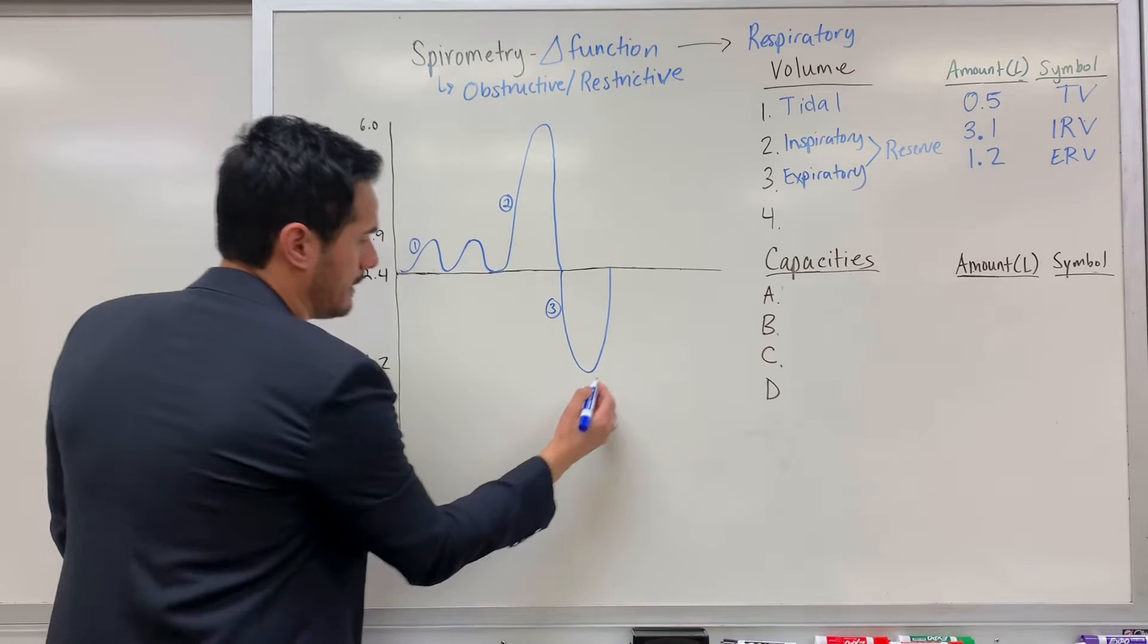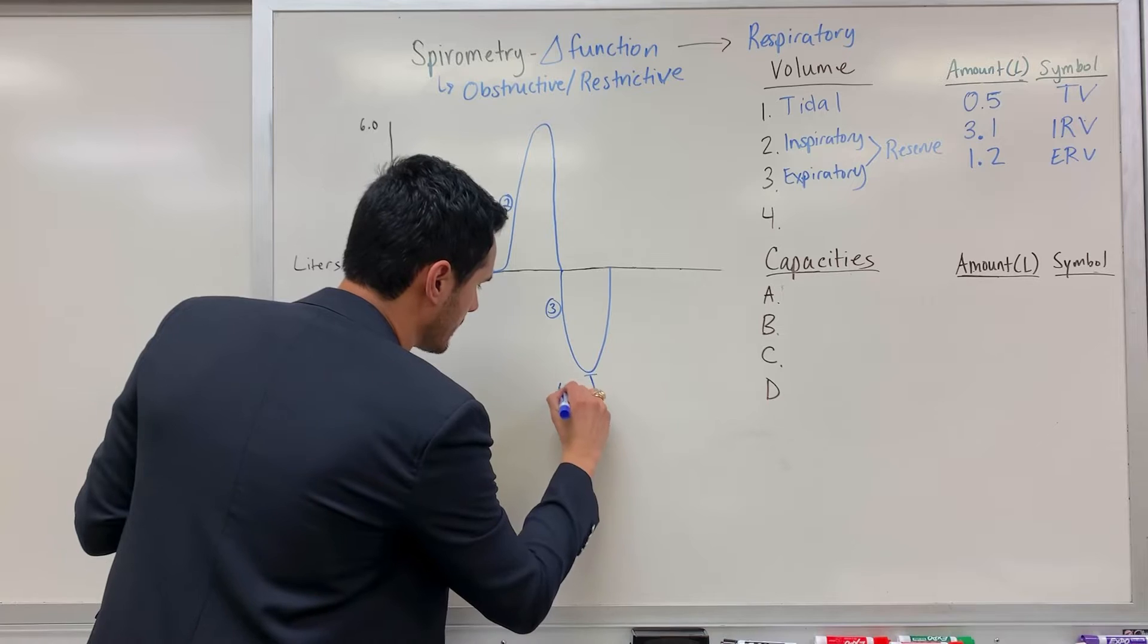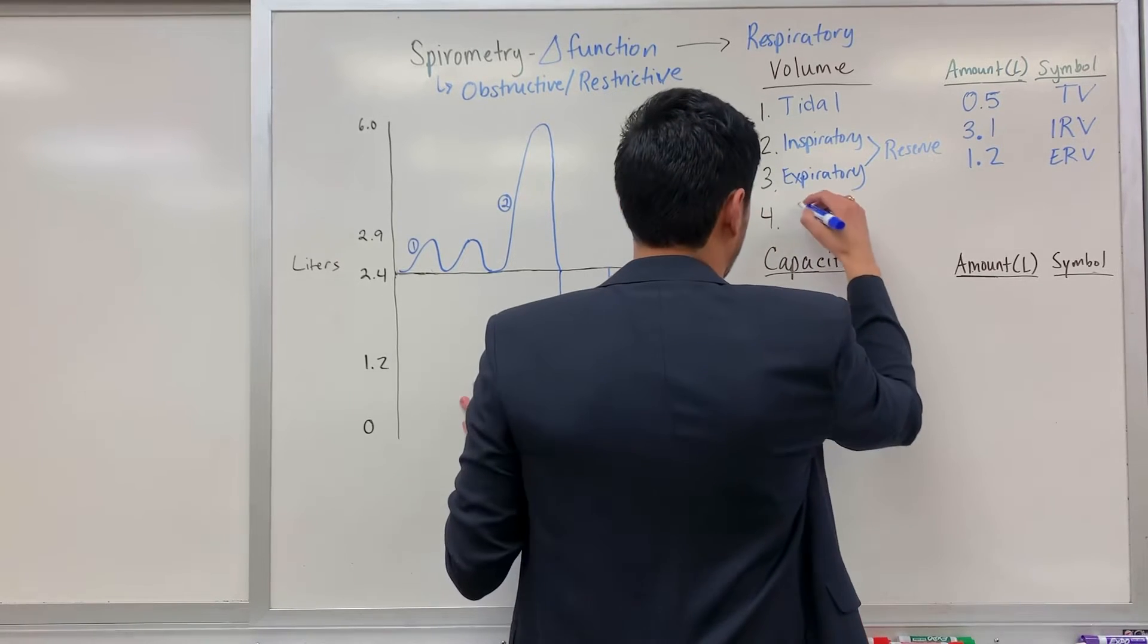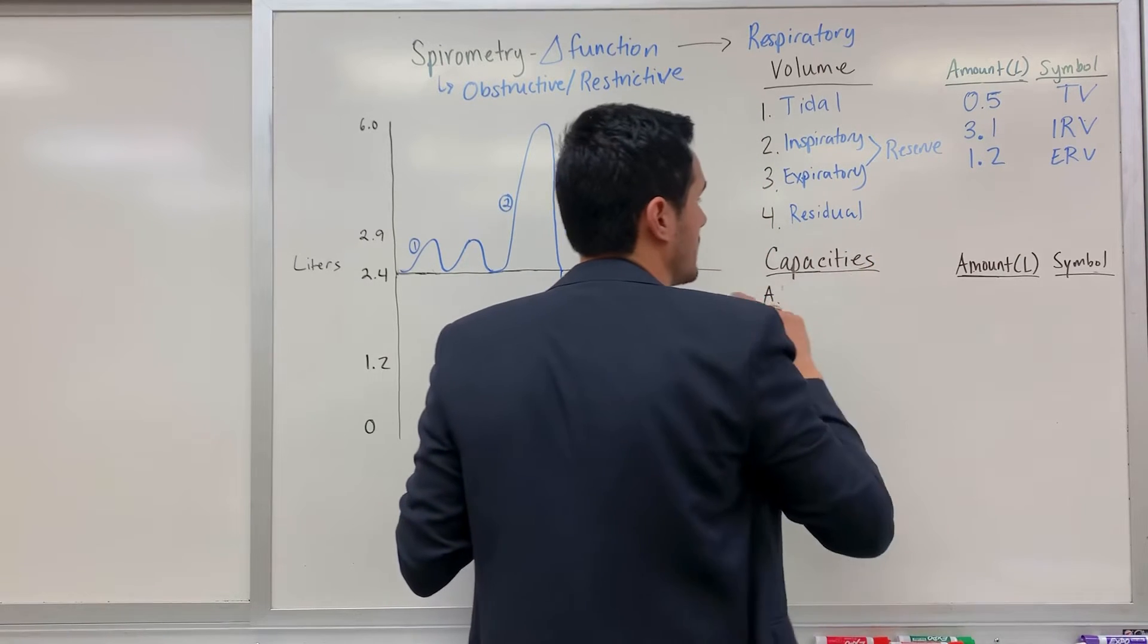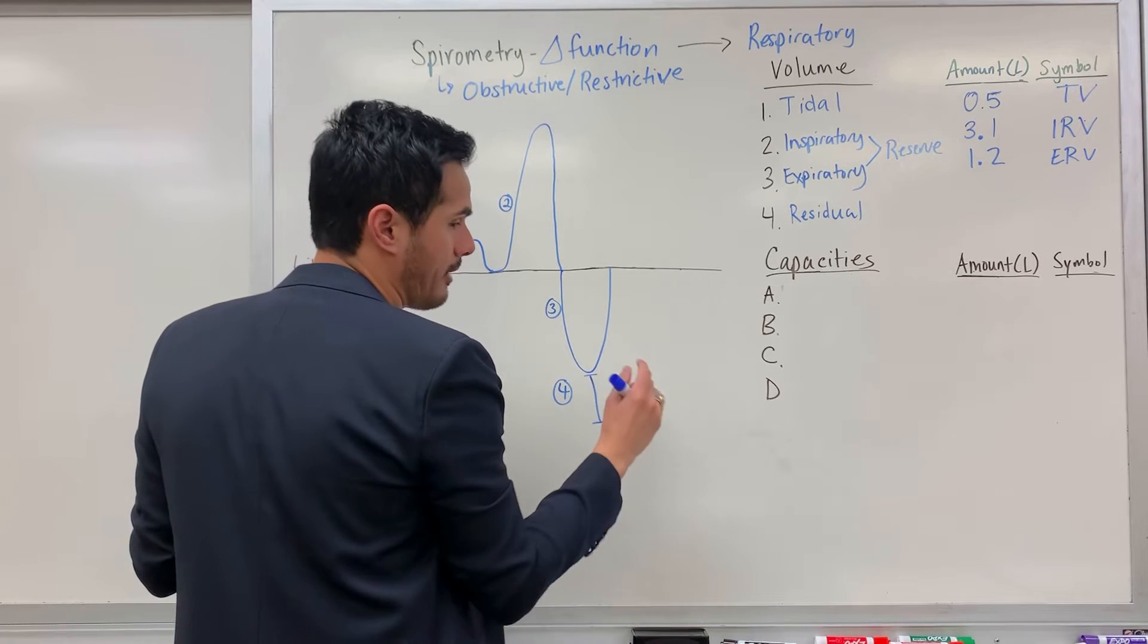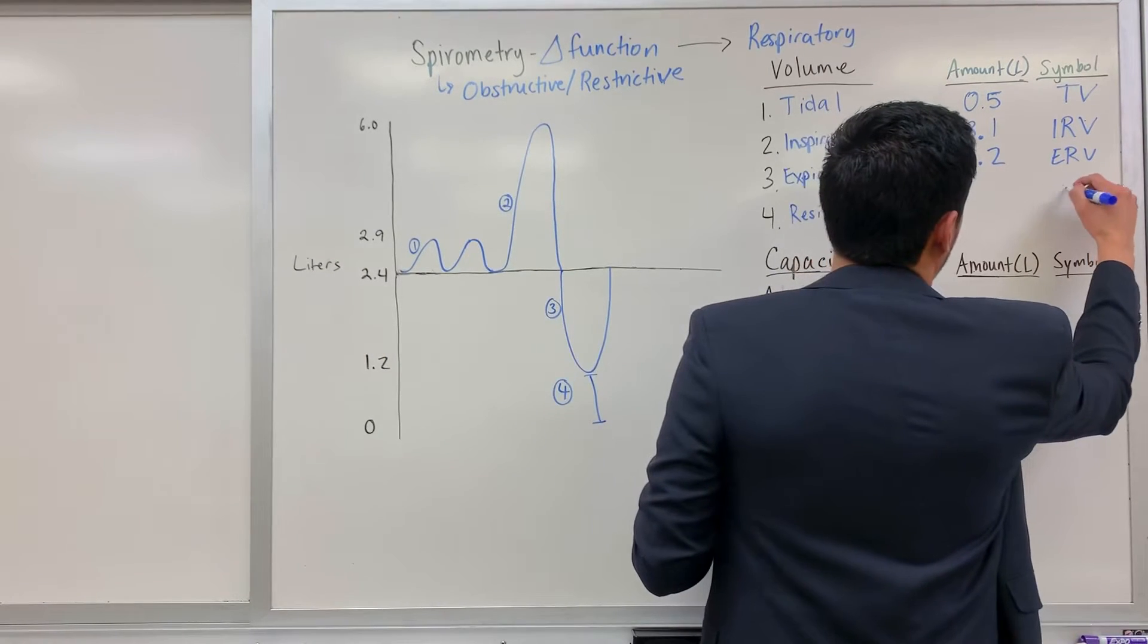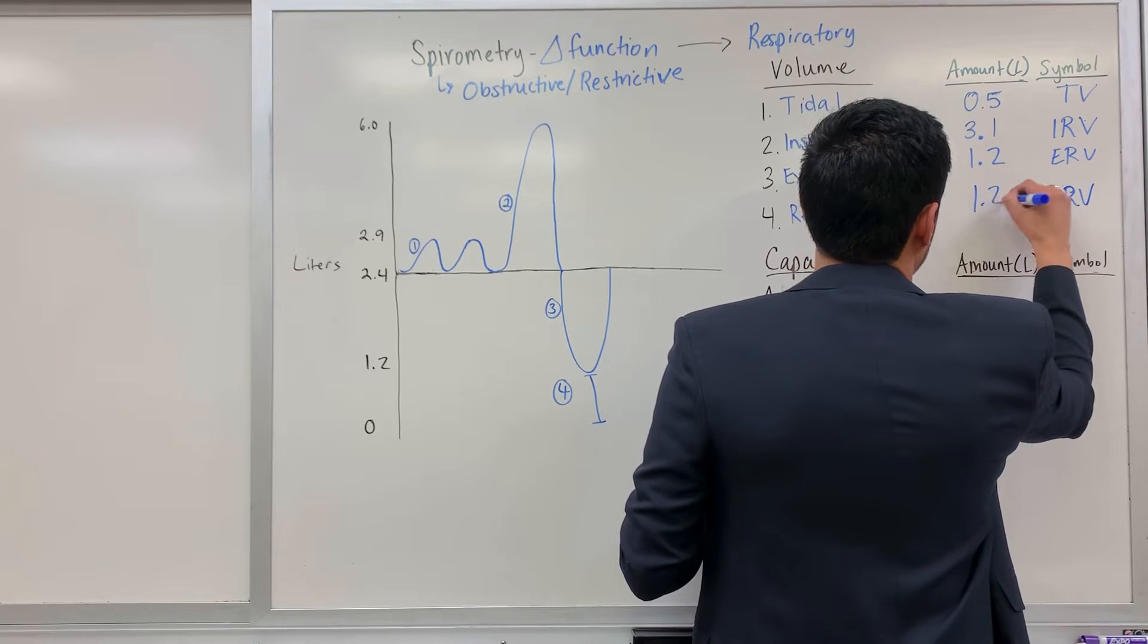So if you look at this graph from here to this point, number four, this is what's known as the residual volume, because this is what stays within the alveoli. A certain amount of air has to stay within the alveoli to prevent it from collapsing. This is noted as RV, residual volume, and a typical value for this is roughly 1.2.